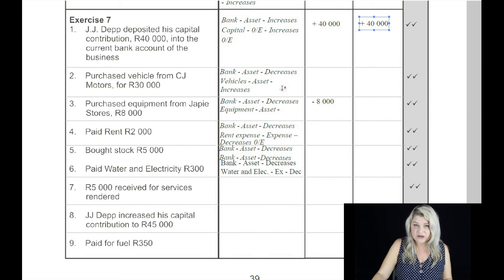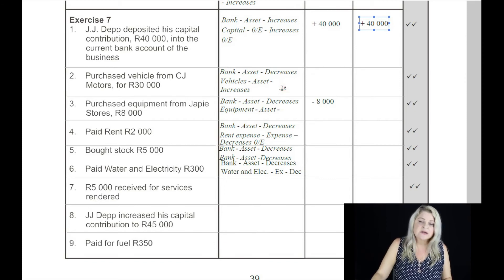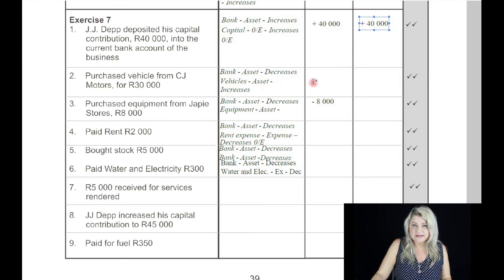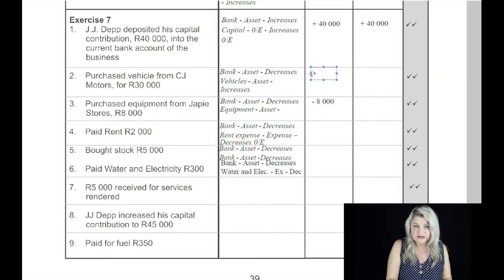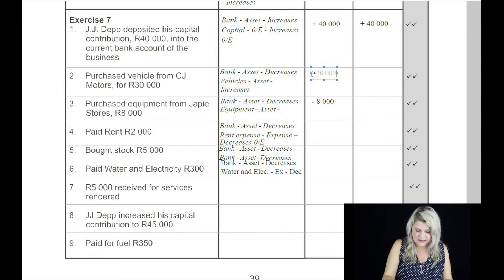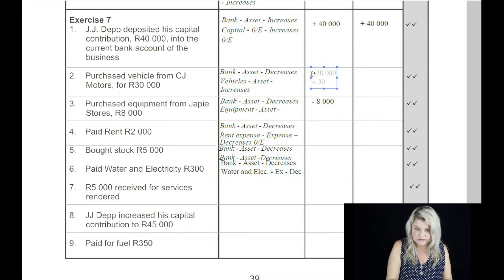Purchase a vehicle from CJ Motors for 30,000 Rand. The two accounts affected are bank and vehicles — they are both assets. One is decreasing and the other one's increasing. Bank decreases by 30,000 Rand because we have to pay for it, and the other asset, vehicles, increases to the value of 30,000 Rand.